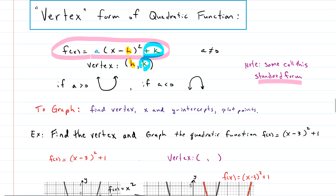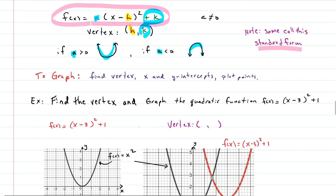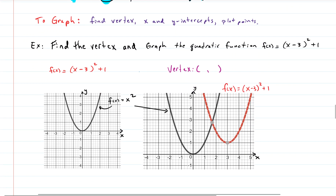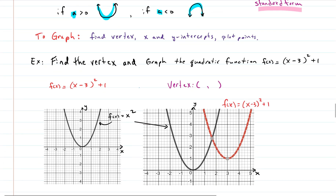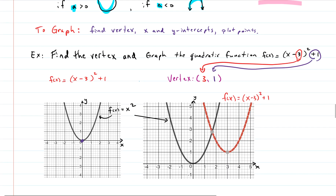This form shares a similarity with other quadratic forms: if a is positive the parabola opens up, if a is negative it opens down. To graph, you could find the vertex plus the intercepts — but since we haven't compressed or stretched the parabola, we can just read the vertex directly from the function. So we get x = 3 and y = positive one, giving us the vertex (3, 1).